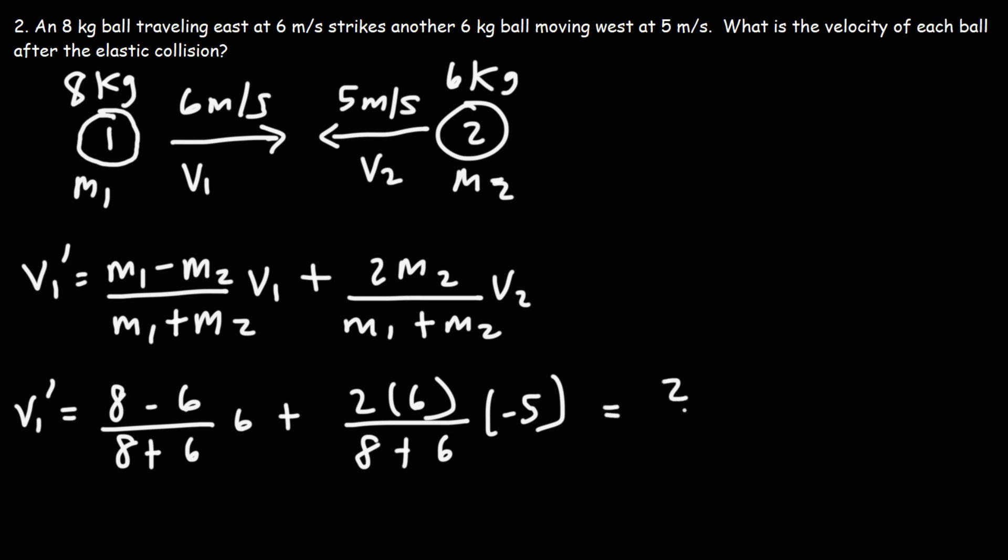So 8 minus 6 is 2, 8 plus 6 is 14, 2 times 6 is 12, and that's over 14 as well. Now, 2 times 6 is also 12, and then we have 12 times negative 5, which is negative 60.